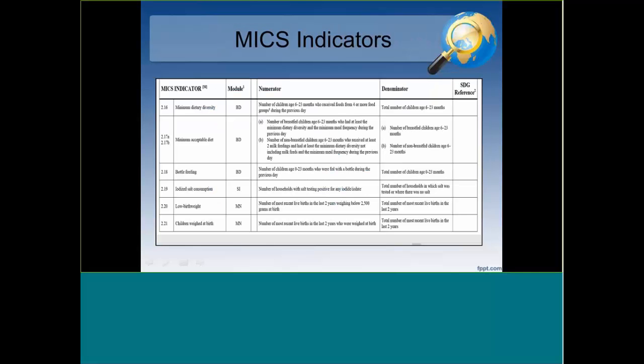Here is a list of the indicators, including things like iodine salt consumption, low birth weight, and children's weight at birth. These may sound unusual, but these things are serious in the developing world — iodine deficiency has real consequences, as some of you may know from U.S. history.